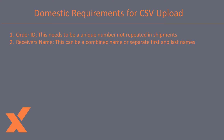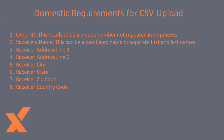Receiver's name — this can be a combined field with both first and last names, or the first and last name can be split into different columns. Receiver address line 1, receiver address line 2, receiver city, receiver state, receiver zip, receiver country code, and receiver phone. Note: this is only required for shipping FedEx domestically.